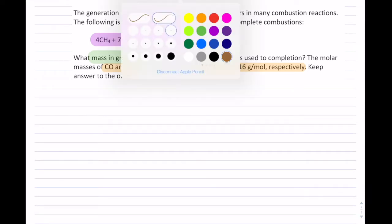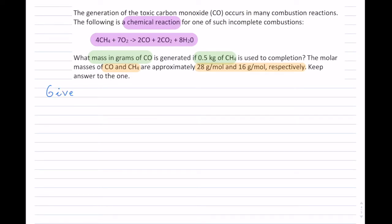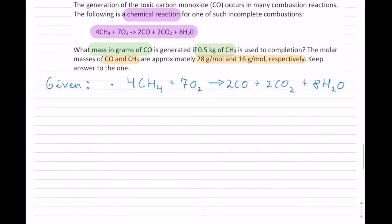Alright, so let's write down our givens here for this reaction. First thing is always write the actual reaction itself. Once you have your reaction, you will start with all the numbers that they give us. Now, the first one is 0.5 kg. And that is of CH4. Notice that I am putting subscripts on my units for all chemical reactions.